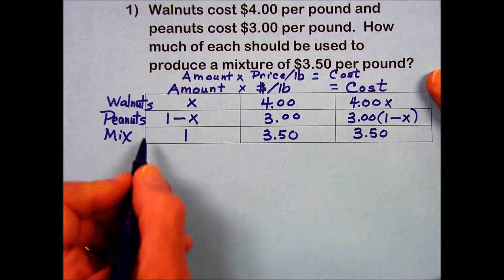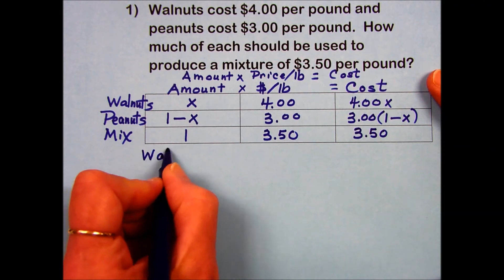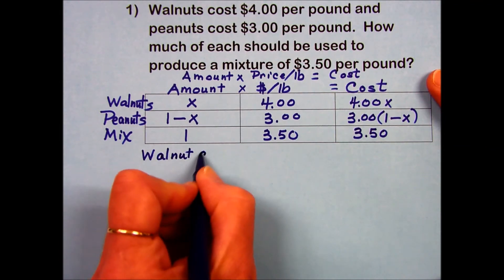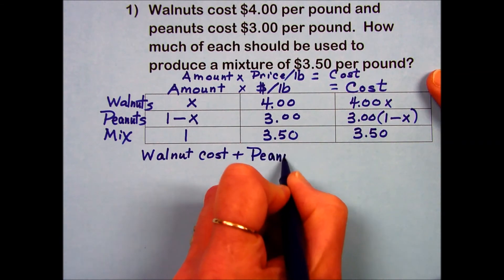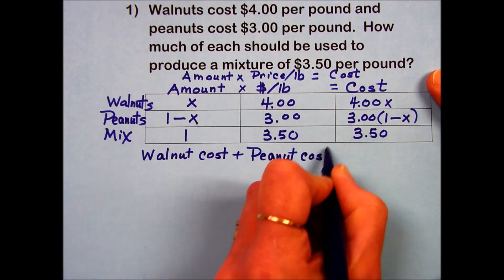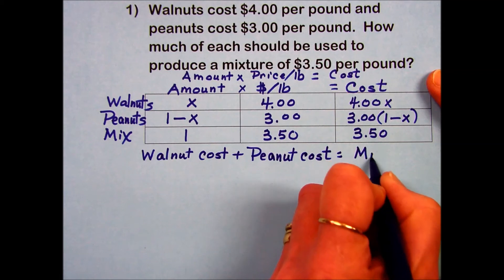For an equation then, we're going to take the walnut cost plus the peanut cost and set it equal to the mixture cost.